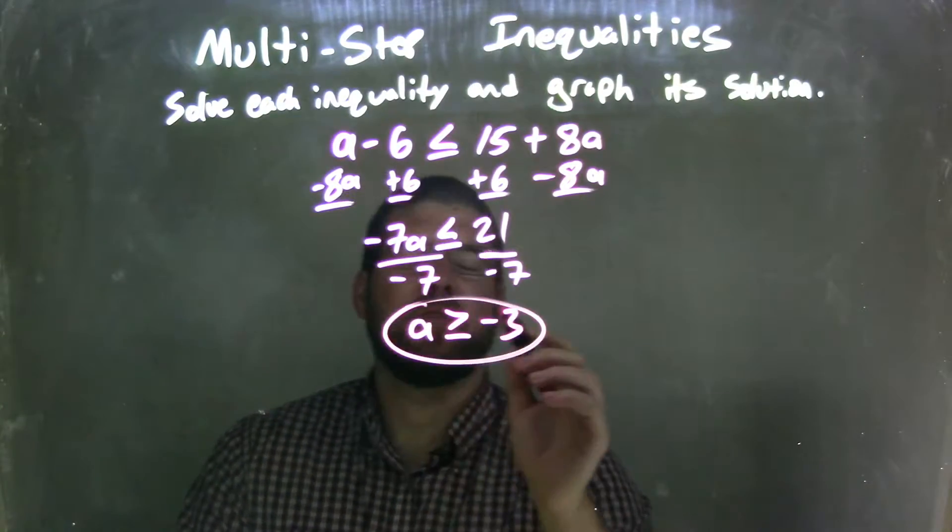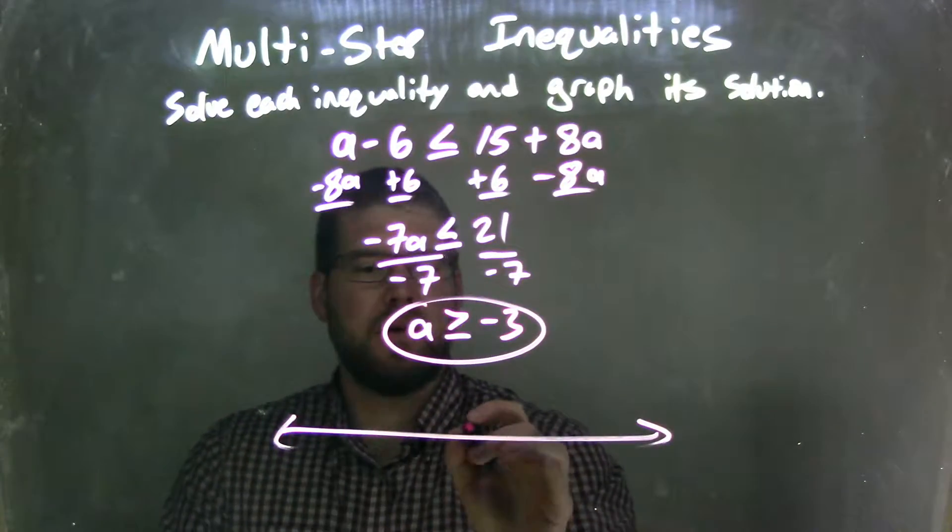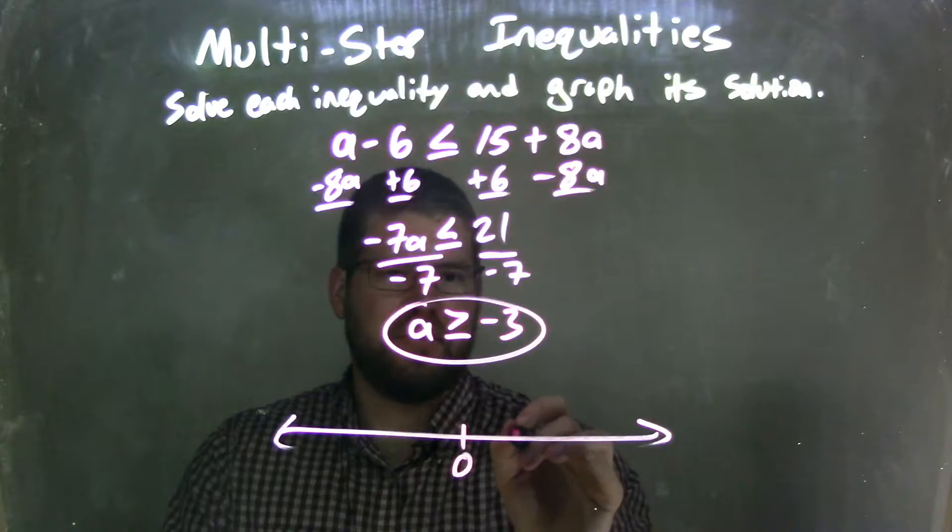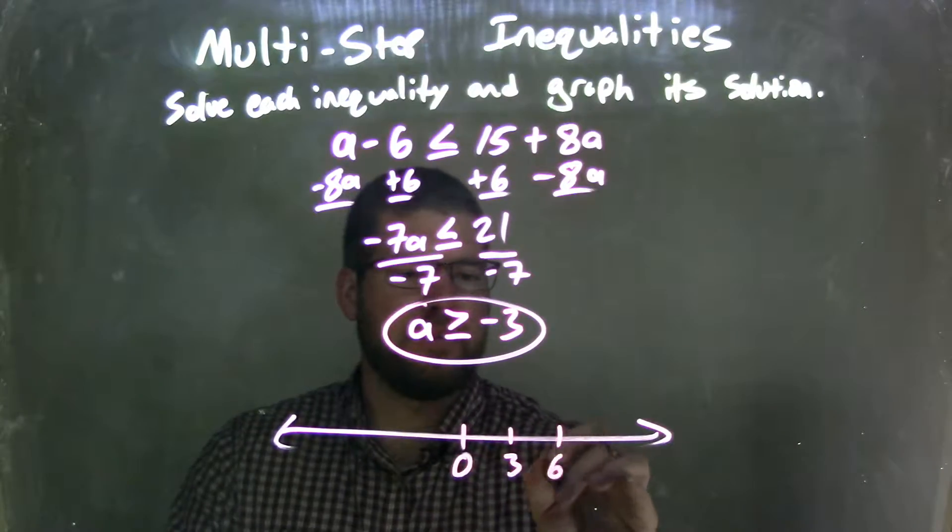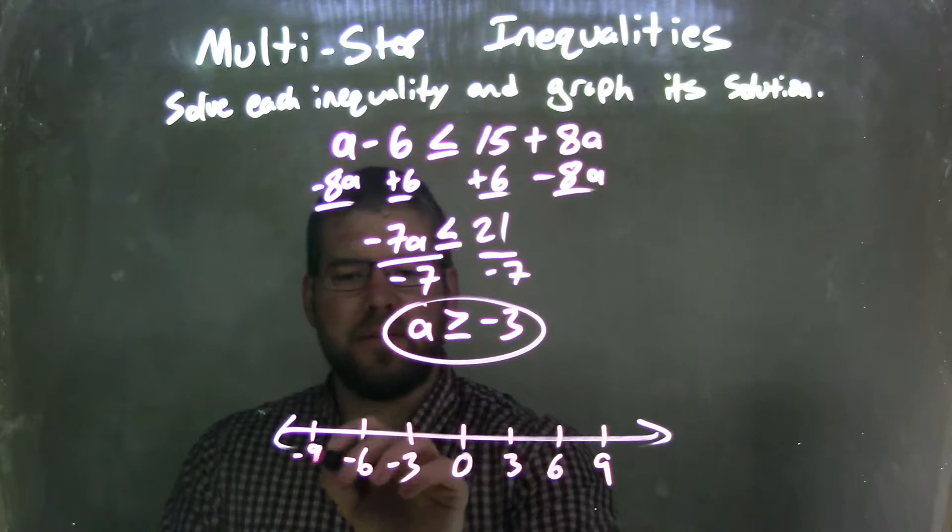And that's it. A is greater than or equal to negative 3. So now I want to graph it. Well, let's go by 3's: 3, 6, 9, negative 3, negative 6, negative 9.